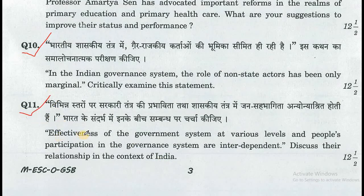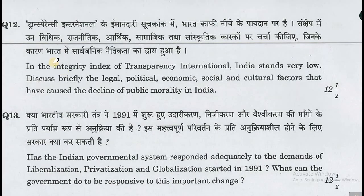Question number 11: Effectiveness of the government system at various levels and the people's participation in the governance system are interdependent. Discuss their relationship in the context of India. Question number 12: In the integrity index of Transparency International, India stands very low. Discuss briefly the legal, political, economic, social, and cultural factors that have caused the decline of public morality in India.